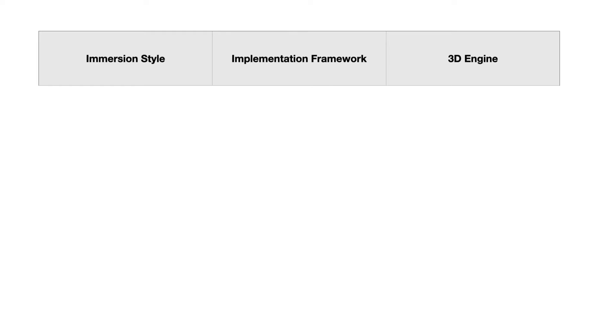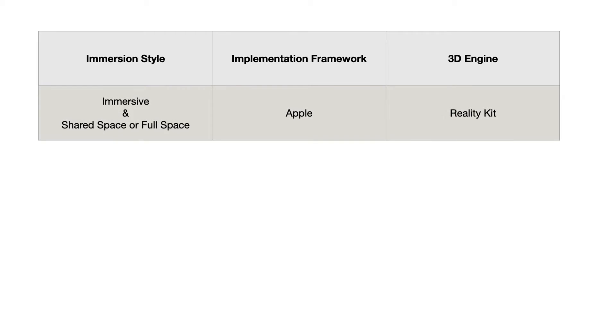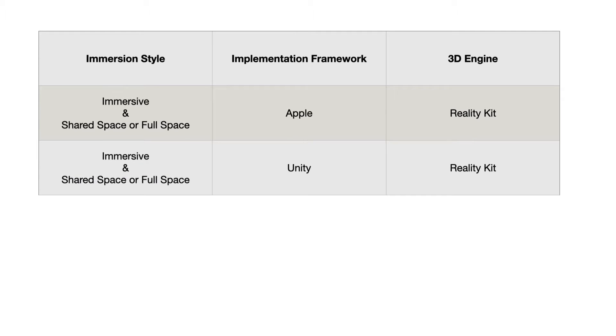A key thing to understand is how the system renders 3D content. To put it simply, a 3D rendering engine is what turns your code into the visual elements that a user interacts with in your app. If you're building an app that lives in the shared space or augmented reality full space, it will always be rendered with RealityKit, Apple's 3D rendering engine.